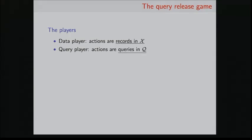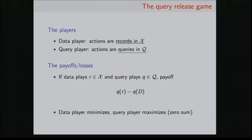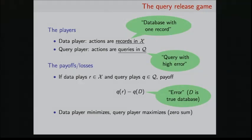To define the query release game, we'll first define these two players. We have a data player and a query player. The data player has actions corresponding to records, possible records, and the query player has actions corresponding to queries in this class Q that we want to answer. So to define the payoffs, if we suppose that one player plays R and the other player plays Q, this will be the payoff, this quantity Q of R minus Q of D. And the data player is trying to minimize this quantity, and the query player tries to maximize this quantity, so it's a zero-sum game. So this might seem pretty complicated, but for some intuition, we can think about the data player's actions as databases with a single record. The query player Q is intuitively trying to play queries with high error. And this payoff here is the error, because here D is the true database. So this is the error of the approximation R on this query Q compared to the true database. So the data player is planning to find a good database that approximates the true database.